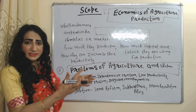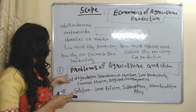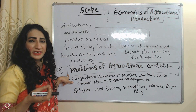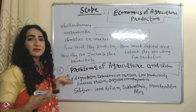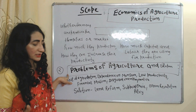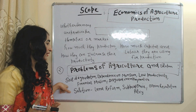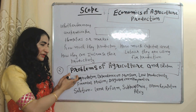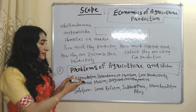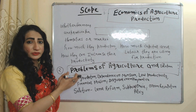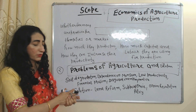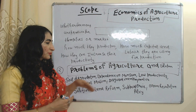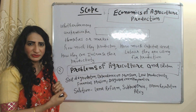The second scope is problems of the agriculture sector and their solutions. We study problems such as soil degradation, dependence on monsoon, low productivity, financial problems, and disguised unemployment. We also study solutions to these problems, such as land reform, support price policy, and the Green Revolution.